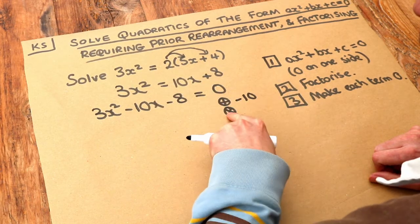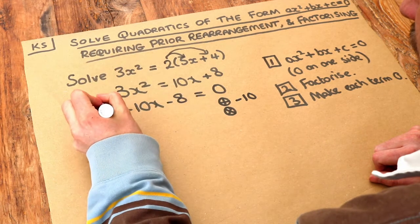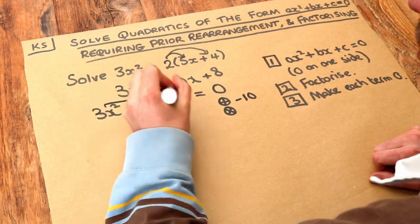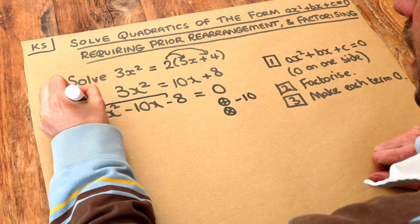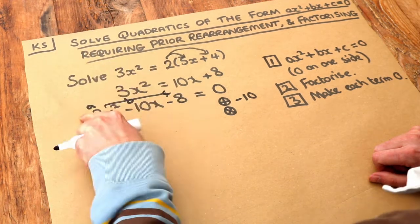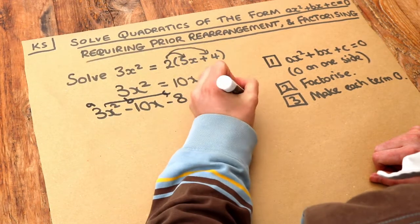Some people call this the AC method because you're finding two numbers which multiply to give the first times the last, where that's A, that's B, that's C. So AC, that would be minus 24.